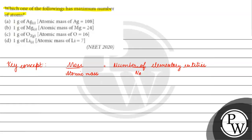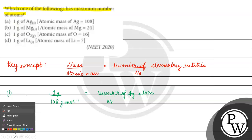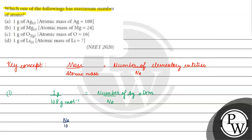Now let's talk about mass. In the first option, the mass given is 1 gram, and the atomic mass is 108 gram per mole (silver). So the number of silver atoms will be equal to Avogadro's number divided by 108.